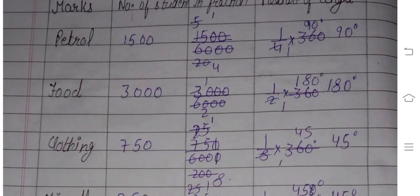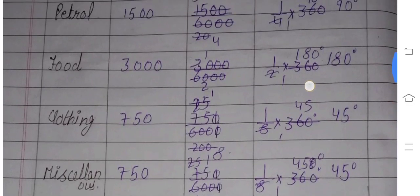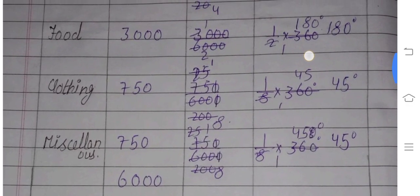Number of students is how many? 1500, 3000, 750, and 750. And when we have total, we have 6000.